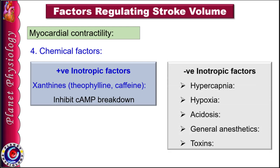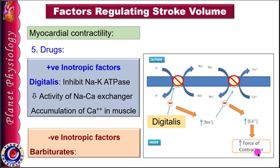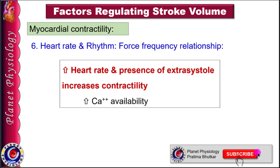Acetylcholine decreases myocardial contractility by acting on muscarinic receptors and decreasing cyclic AMP concentration. Xanthines present in tea and coffee increase intracellular calcium levels by inhibiting breakdown of cyclic AMP, improving force of contraction. In contrast, hypercapnia, hypoxia, acidosis, general anesthetic agents and toxins reduce myocardial contractility. Drugs like digitalis increase ventricular contractility by inhibiting the sodium-potassium pump, reducing the sodium gradient, which decreases sodium-calcium exchanger activity and increases calcium availability for muscle contraction. Drugs like barbiturates have negative inotropic effect.